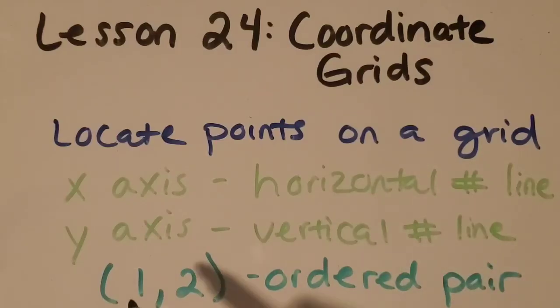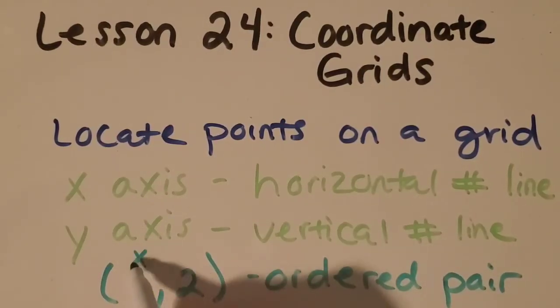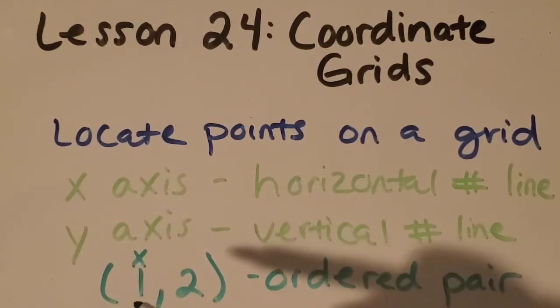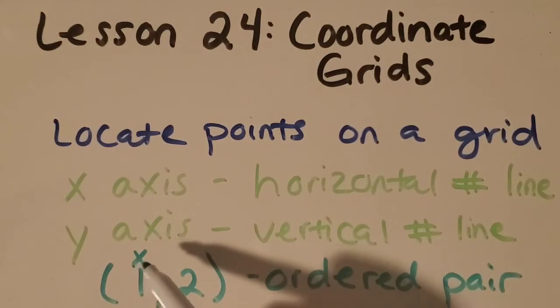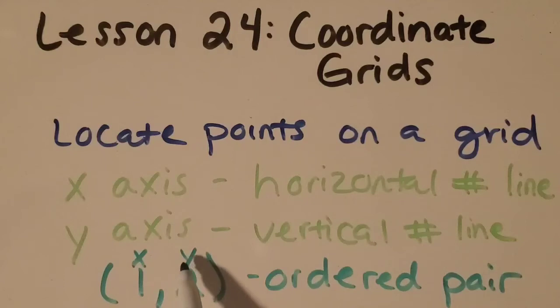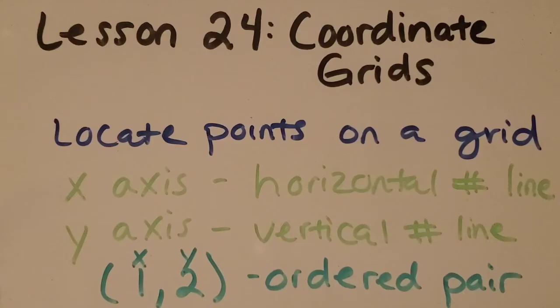So the first amount is always your x amount, so it's how much you move over on the x-axis. And then the second amount is your y number, your y-coordinate, and it tells you how much you go up. And we will practice this to get even better at it.